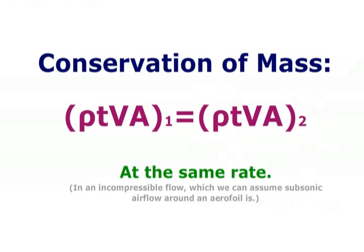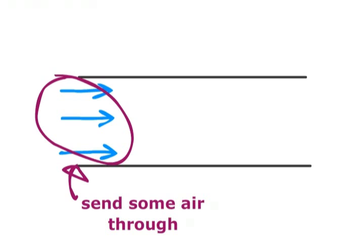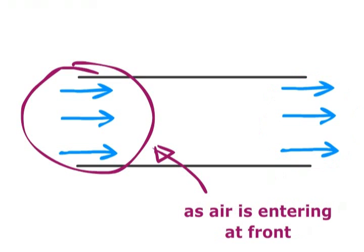This means that if I have a sealed wind tunnel, like this wonderfully illustrated example, and I start sending through some air at the front, then the same amount of air must exit through the back at the same rate as the front. Well that's pretty obvious isn't it?